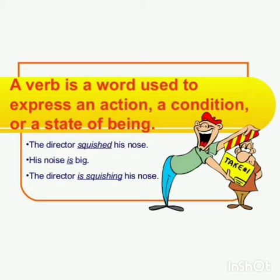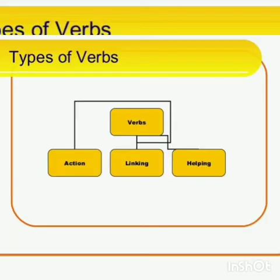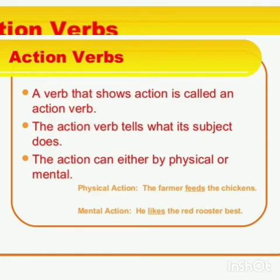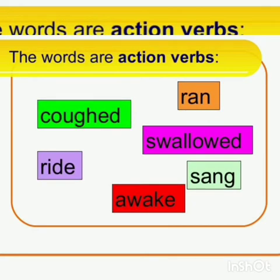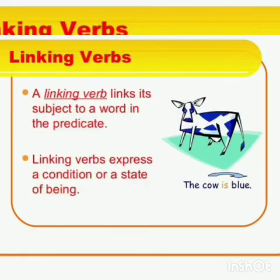Verbs are generally classified into three types: action verbs, linking verbs, and helping verbs. An action verb denotes the action in a sentence — it tells what the subject does. Examples include: coughed, wrote, awoke, sang, swallowed, ran. All these words denote action, so they are called action verbs.